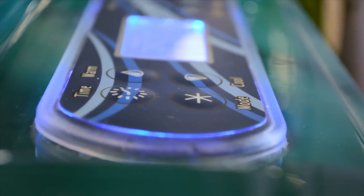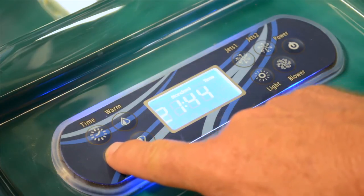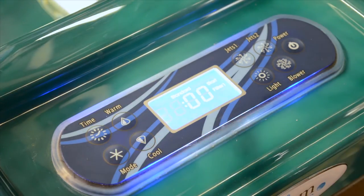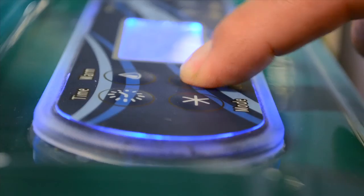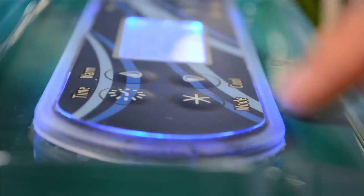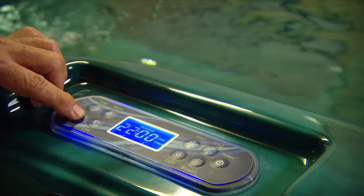To set the filter times, press the time button once, then the mode button three times. Then set the start and end times of each of the two filter periods using the warm or cool buttons, followed by the mode button to confirm your settings. Two hours per filter period is suggested, but this can be increased in times of heavy use.